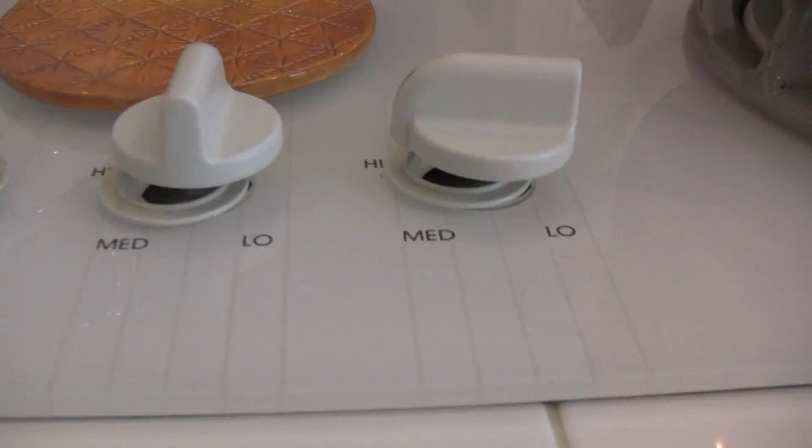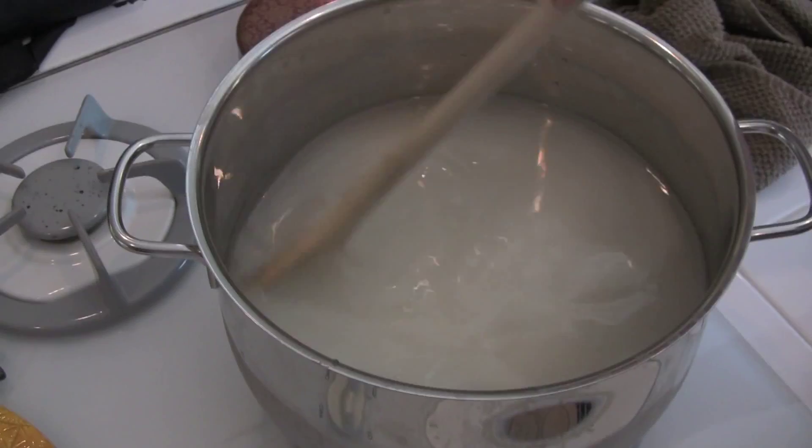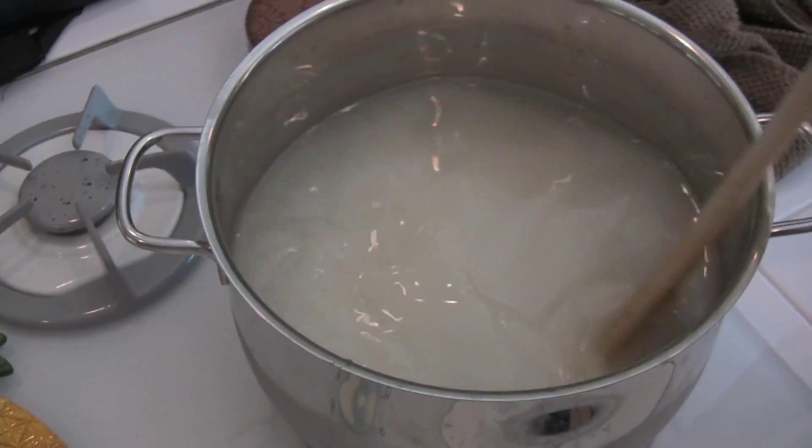Put the pot on a stove top and set it on high. Gently stir the mix while keeping an eye on the thermometer.